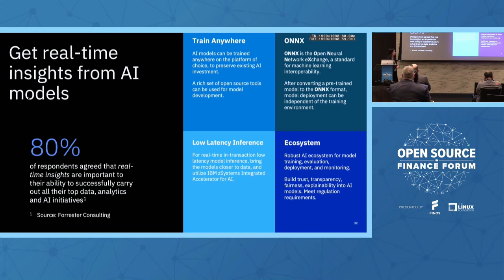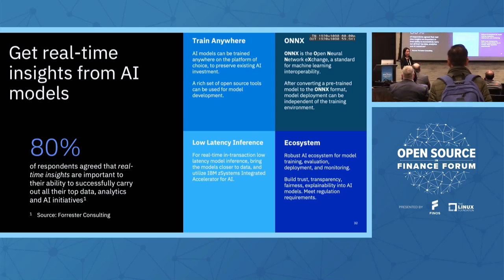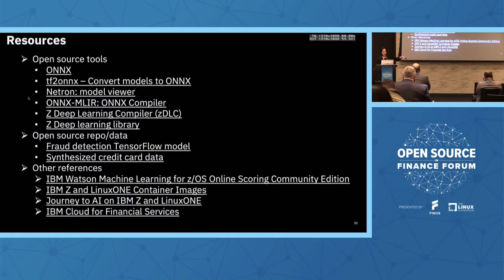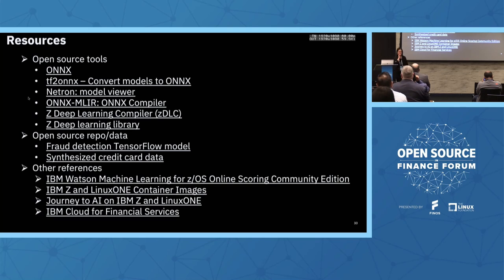To sum it up, what we really talked about today is how I used open source to train an AI model. I want to achieve the goal of training anywhere and deploying anywhere. The ecosystem is really important. Here are the different resources — they're in the deck I posted, you can find more information. My contact is on the cover page, feel free to contact me. I know I ran out of time — any questions?